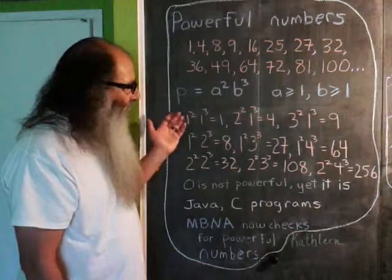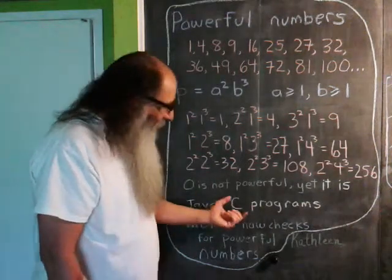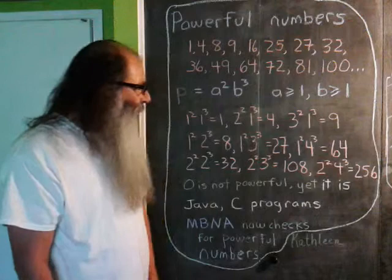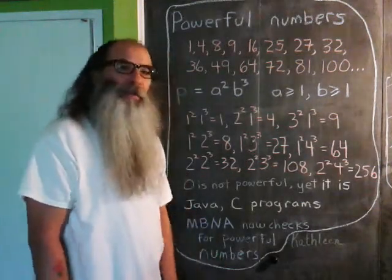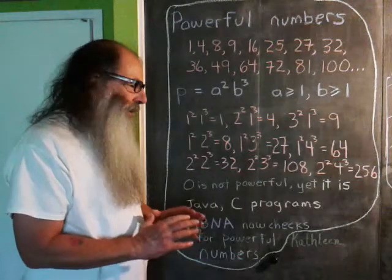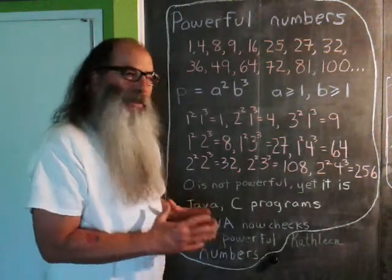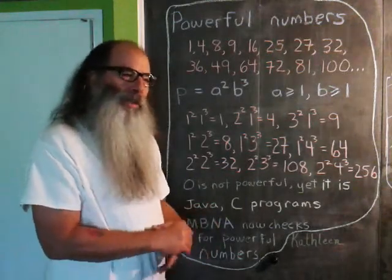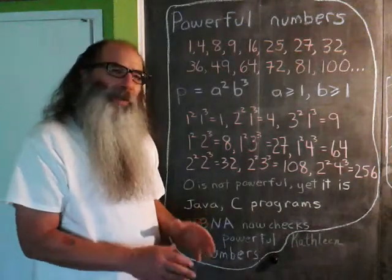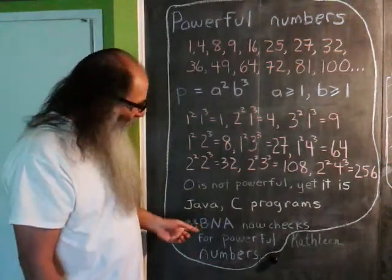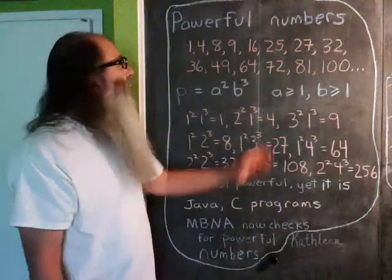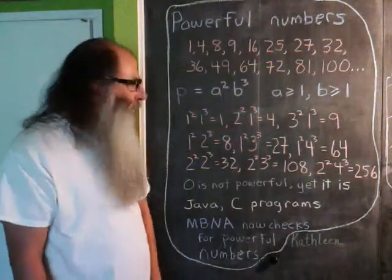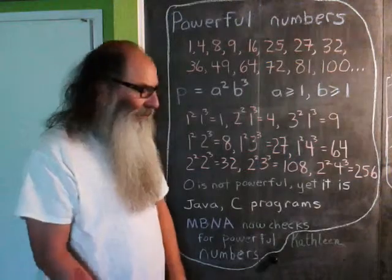I later came home and wrote a different program in C that I added to my math babbler number analyst. So now, when I want to create a basic arithmetic bit about a particular number, when I submit that number to my math babbler number analyst, it will check to see if the number is a powerful number or not. And that all seems to be working fine.